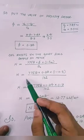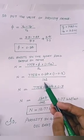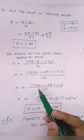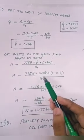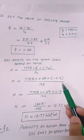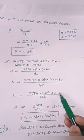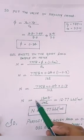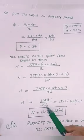So we will find oil exist. 1 minus 0.3 upon oil formation volume factor, 1.02 is the oil formation volume factor. N equals 7758 into 0.24 into 0.7, which is 1 minus 0.3, upon 1.02.